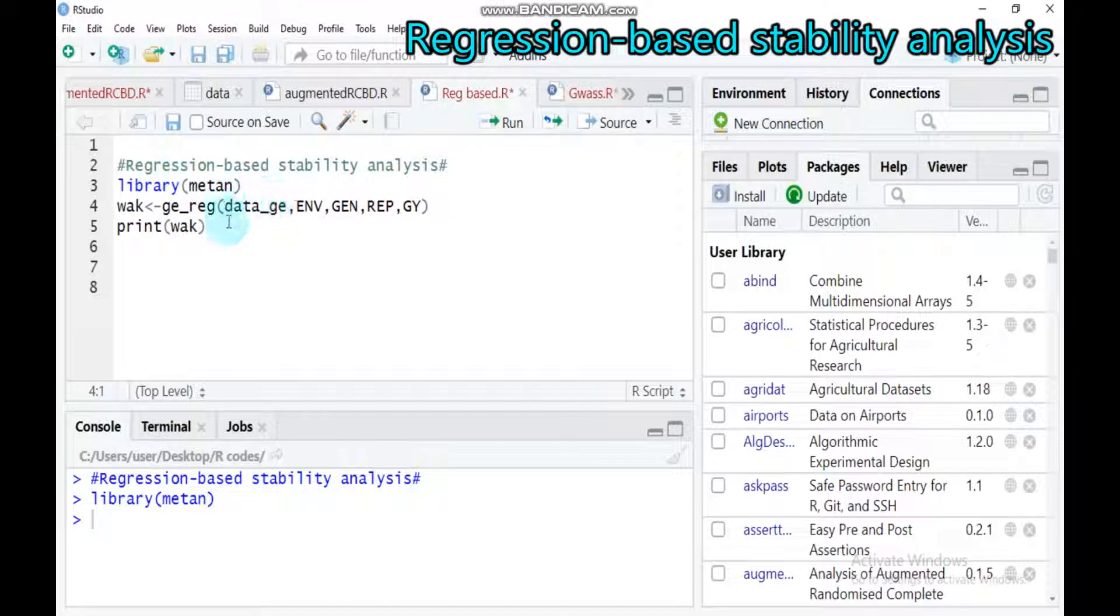Under the parenthesis, you have to indicate your data name. Here for this tutorial, the data name is data_ge. And you have to locate the columns that contain the environment, the genotype, replication, and the response variable that you are going to analyze, the grain yield. GY stands for grain yield. So by this way, you can incorporate all this syntax and run it in your RStudio.